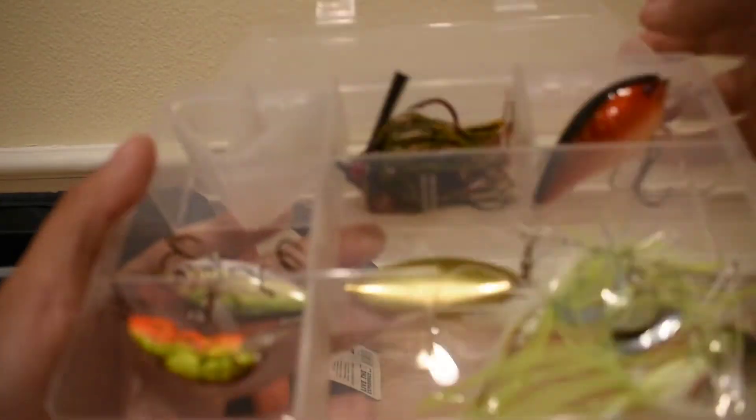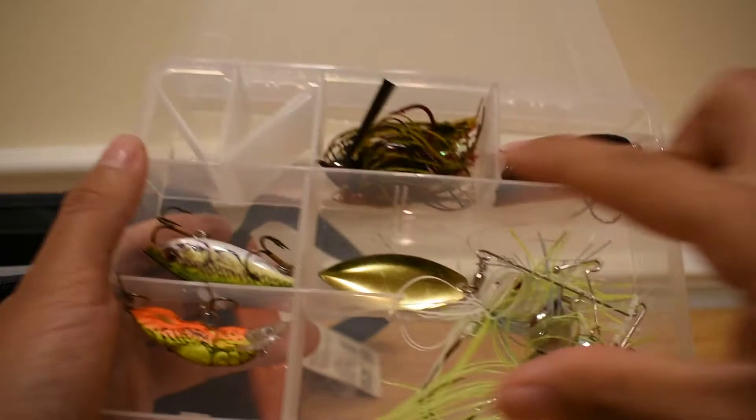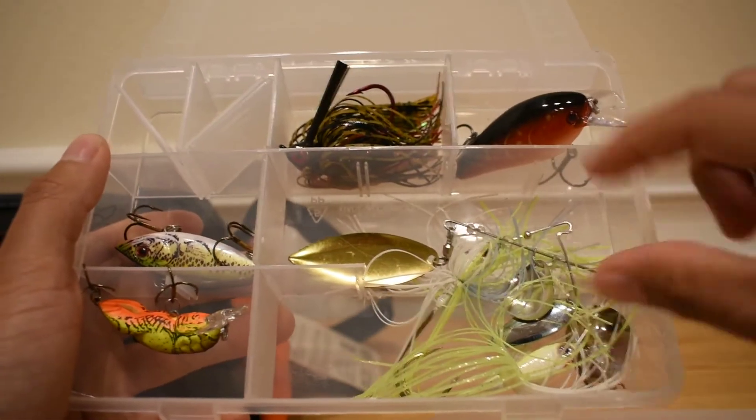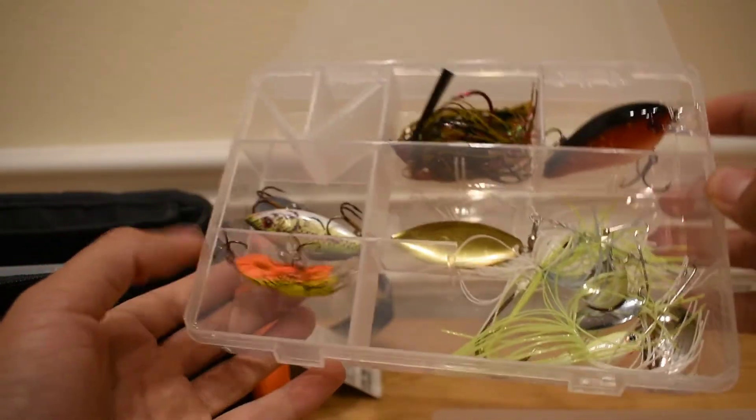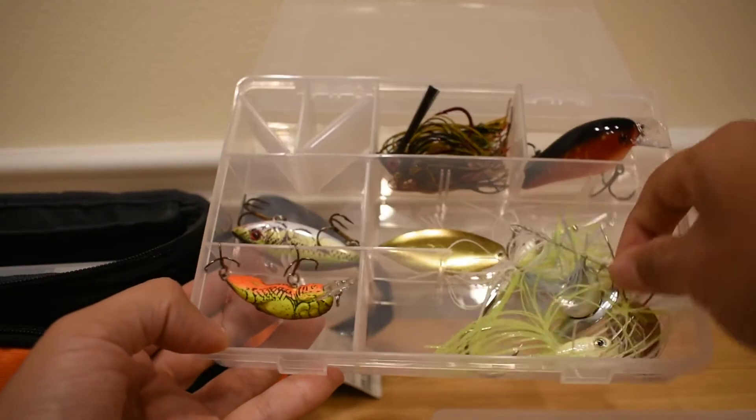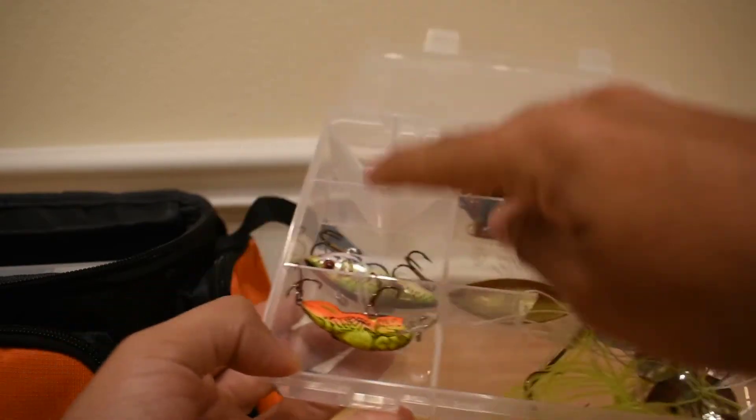I cut the dividers on this one just so I could hold some spinner baits in here, because normally you can never hold spinner baits in these smaller style boxes. So like this I'm able to here, and then I have the other boxes and other compartments as well.